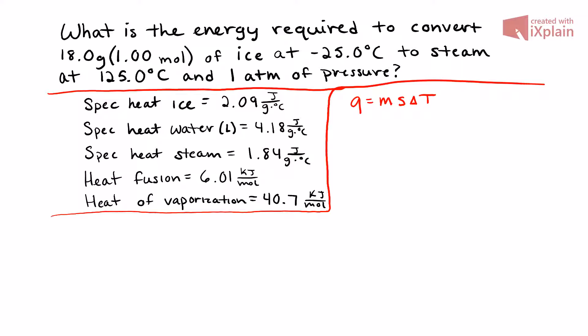What is the energy required to convert 18 grams, also known as 1 mole of ice, at negative 25 degrees Celsius to steam at 125 degrees Celsius, all at one atmosphere of pressure? To start this problem we're going to be using the formula: heat equals mass times specific heat times the change in temperature.